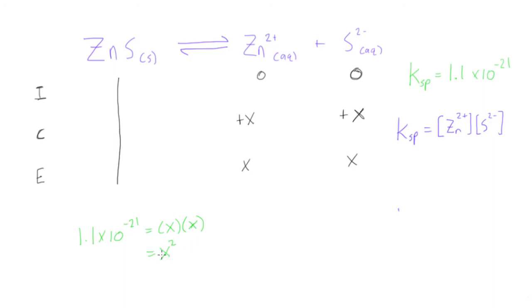both of the equilibrium concentrations here, or we could just write this as x squared. And then when we solve for x, we can just write it here.